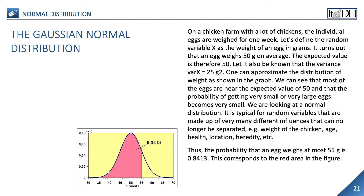The reason why it is so easy to work with random samples in empirical collected data is that in nature measured values are usually normally distributed, as the Göttingen mathematician Carl Friedrich Gauss already discovered. Let's say that on a chicken farm, individual eggs were weighed for a week. Let's define the random variable x as the weight of an egg in grams. It turns out that an egg weighs 50 grams on average — the expected value is therefore 50 — and the variance var(x) equals 25 grams squared. We can see that most of the eggs are near the expected value and that the probability of getting very small or very large eggs becomes very small. We are looking at a normal distribution.